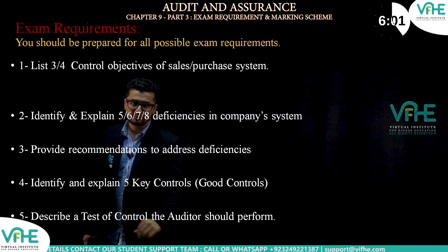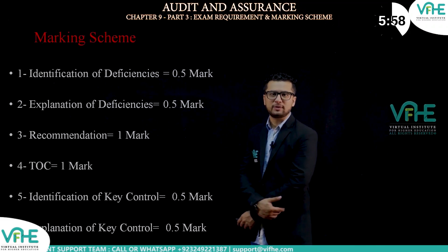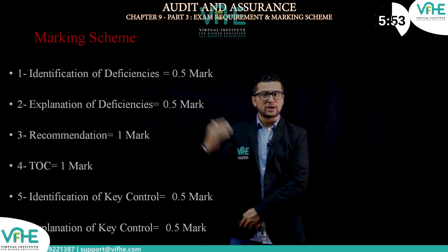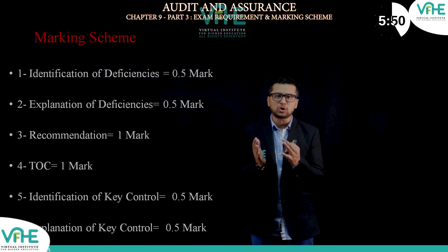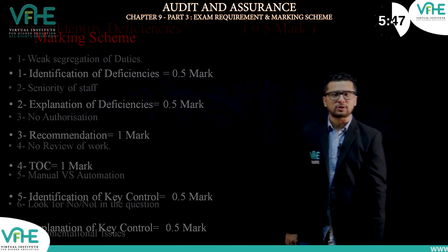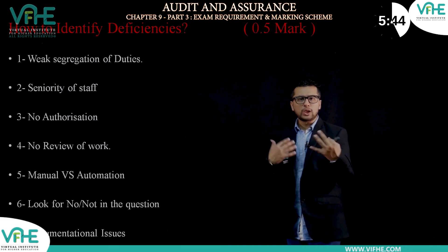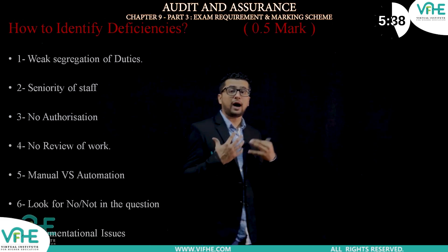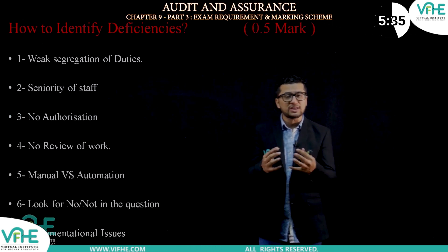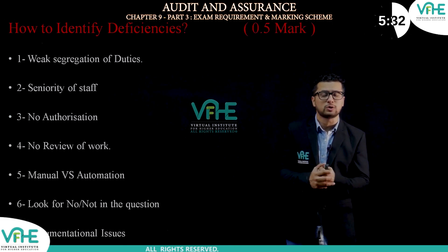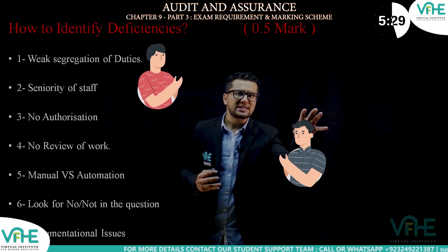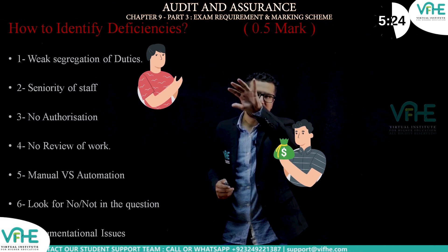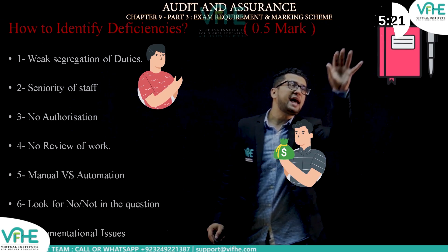Now let's explore the more important and tricky exam requirements. Let's explore the exam technique: how to identify a deficiency and how to score 0.5 marks for a weakness within an internal control system. For example, Mr. Emma receives cash from the customer, updates the cash day book, and updates the receivable ledger control account.